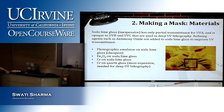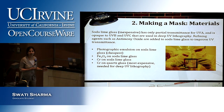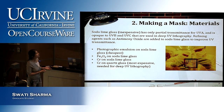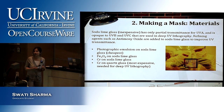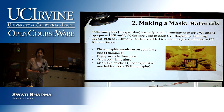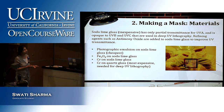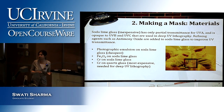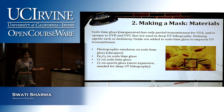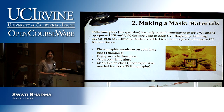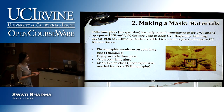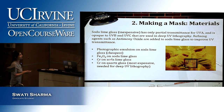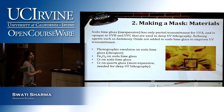The substrate materials for masks: soda lime glass is the cheapest but not transparent to UV. Adding antimony oxide as a refining agent improves UV transparency, and research is ongoing to find even better chemicals. Quartz is another option — a little more expensive but excellent UV transparency. Ferric oxide and chrome are the common materials used for the opaque pattern on the mask.